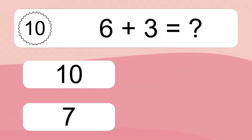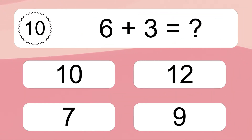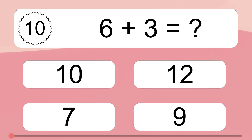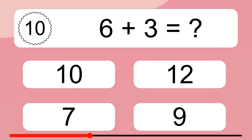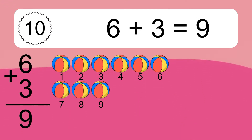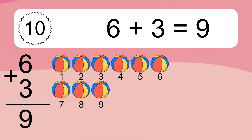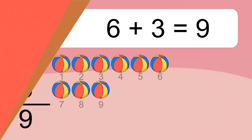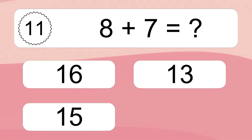6 plus 3 equals what? 6 plus 3 equals 9. Let's count it: 1, 2, 3, 4, 5, 6, 7, 8, 9.